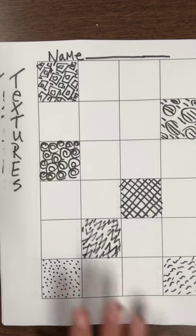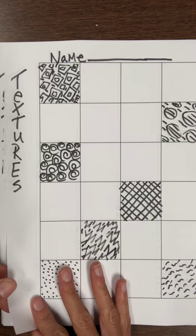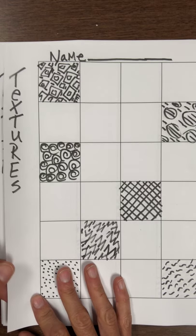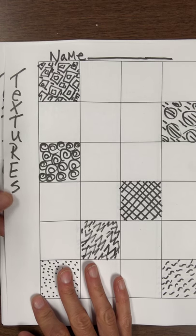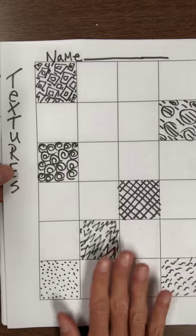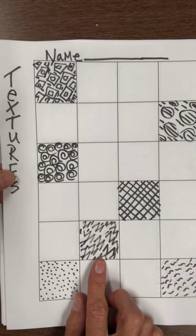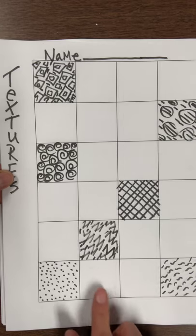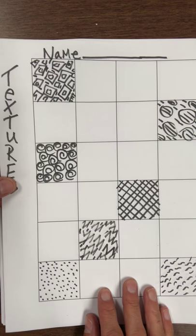Okay third graders, now that we learned the difference between visual texture and actual texture, the texture you can touch, we are going to be drawing our visual textures on this worksheet and the ones that you put here will be the ones we use for our project.